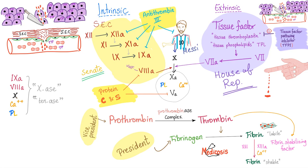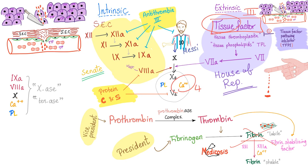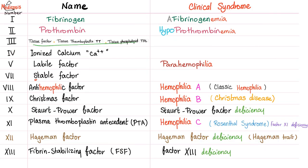Most of these coagulation factors come from the liver. If I have liver disease, I will have decreased levels of these factors, which leads to inability to form fibrin fibers — secondary hemostasis is gone. Factors that do not come from the liver include tissue factor (factor 3), which comes from the tissue and endothelium; calcium (factor 4); and factor 8, which mostly comes from the endothelium, along with von Willebrand factor from platelets and endothelium.